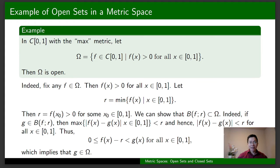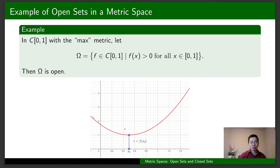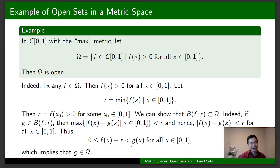This minimum r exists by the Extreme Value Theorem, and r equals f(x₀) where x₀ is in the interval — this is the point at which f has an absolute minimum on the closed bounded interval [0,1]. Because f(x) is greater than zero for all x in this interval, f(x₀) is also greater than zero, and therefore r is greater than zero.